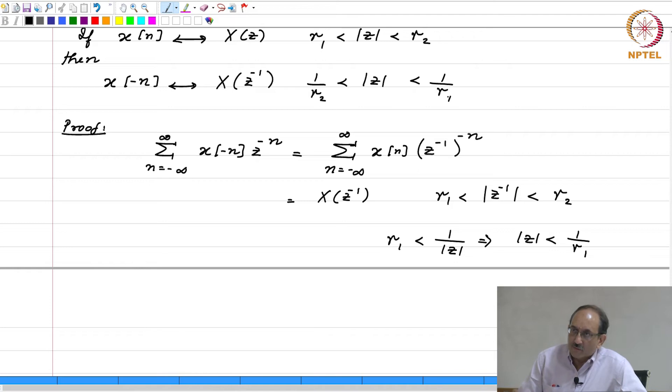Yeah, the ROC should always be of the form mod z between 2 quantities. You are right. Therefore, this is now 1 by r 2 less than mod z less than 1 by r 1, ok. Now, it is correct, right? Yeah.